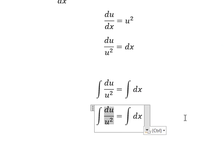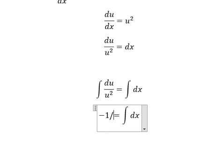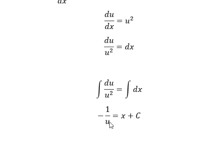Next, we put the integration for both sides. This one we have negative 1 over u, this one is about x plus C.